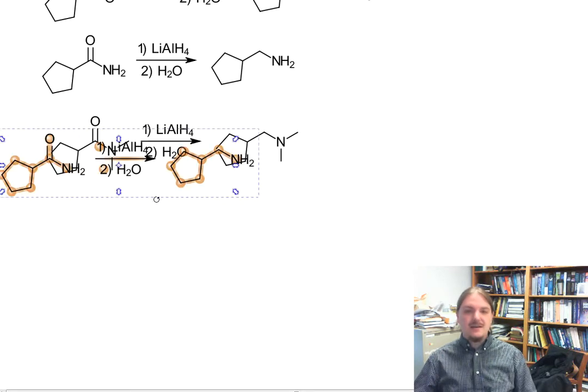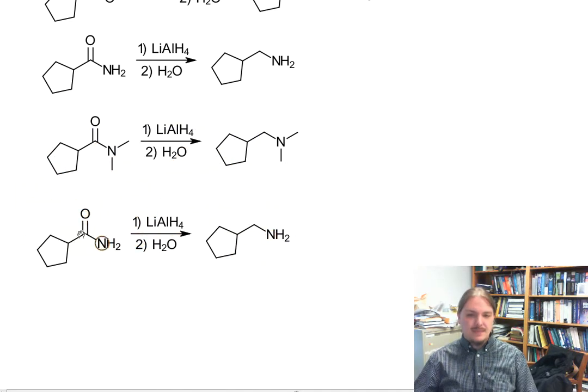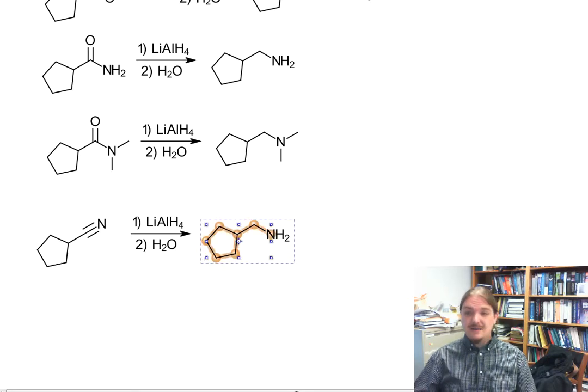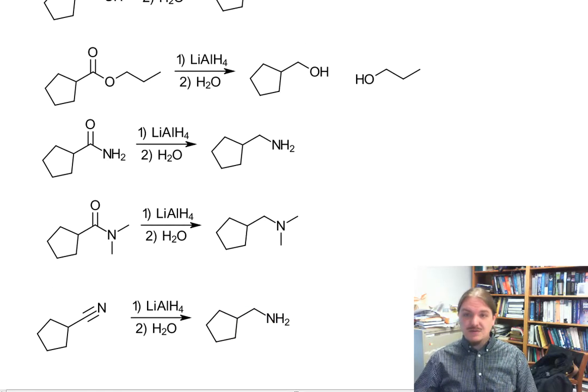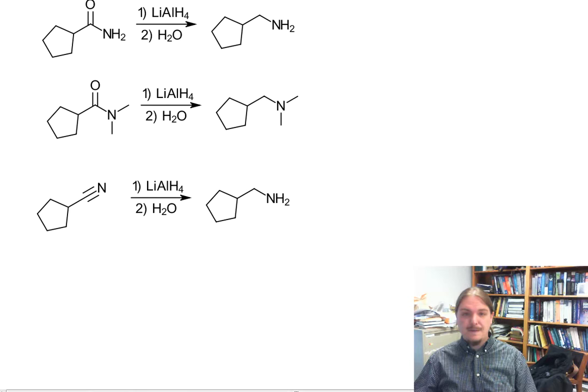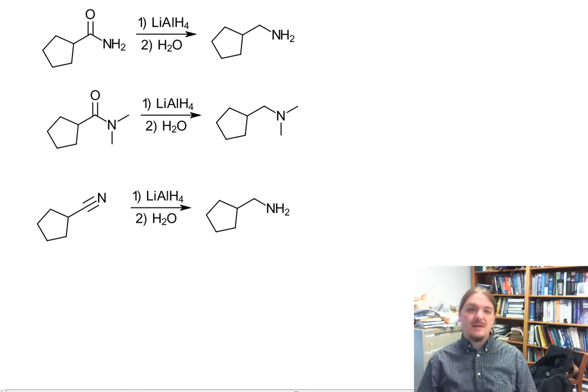And then finally, lithium aluminum hydride reduces nitriles to primary amines as well. So this is it. Only a couple of different functional groups that can come out of this. Alcohols for acid chlorides, anhydrides, carboxylic acids, and esters. Amines for amides and nitriles.